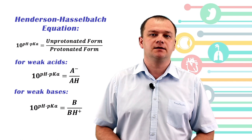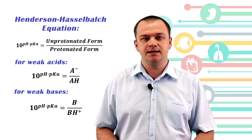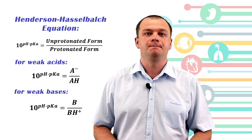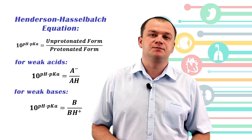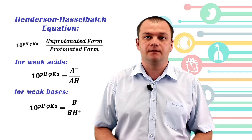You can see the Henderson-Hasselbalch equation: on the left side we have 10 to the power of (pH minus pKa), and on the right side we have the ratio between ionized and non-ionized forms for acids, and between non-ionized and ionized forms for bases. If the difference pH minus pKa is negative, we are in an acidic environment; if it is positive, we are in an alkaline environment.